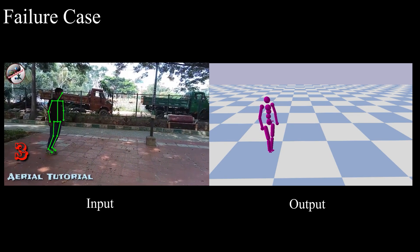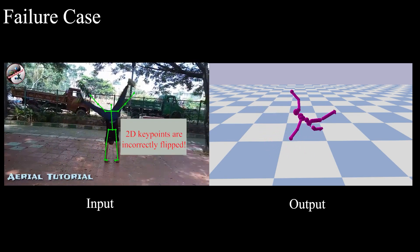Our approach relies on the accuracy of joint detections in 2D. Therefore, when the 2D keypoint detector fails, the results can be inaccurate.